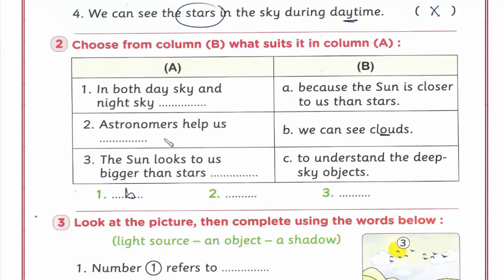Astronomers - علماء الفلك - help us to understand the deep sky objects. بيساعدونا ان احنا نفهم the deep sky objects. يبقى number C. The sun looks to us bigger than stars because the sun is closer to us than stars.